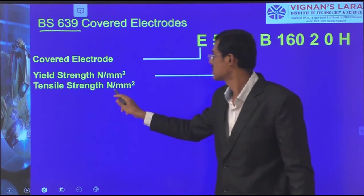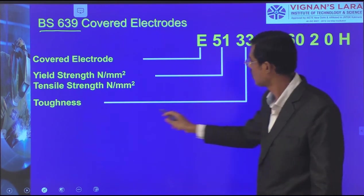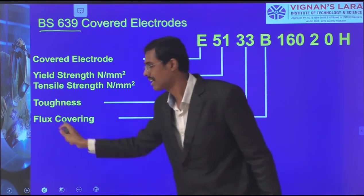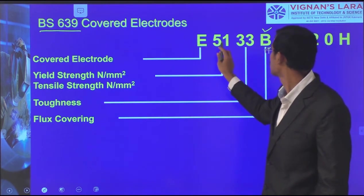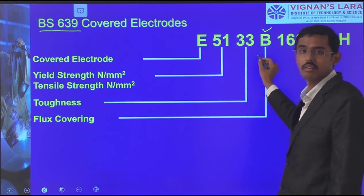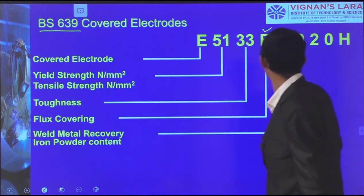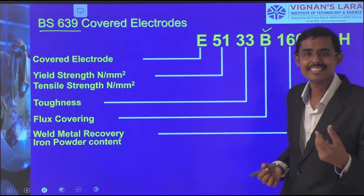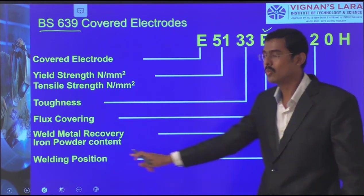In British Standard 6039 classification: '51' belongs to the electrode tensile or yield strength. 'W33' — the next factor, '33', belongs to toughness. The next 'B' belongs to flux covering — this belongs to basic fluxes. In the same format, the category may have cellulose, rutile, or basic. The next one belongs to weld metal recovery and iron powder content — how much iron we are adding for arc stability. The last two digits represent the welding positions.